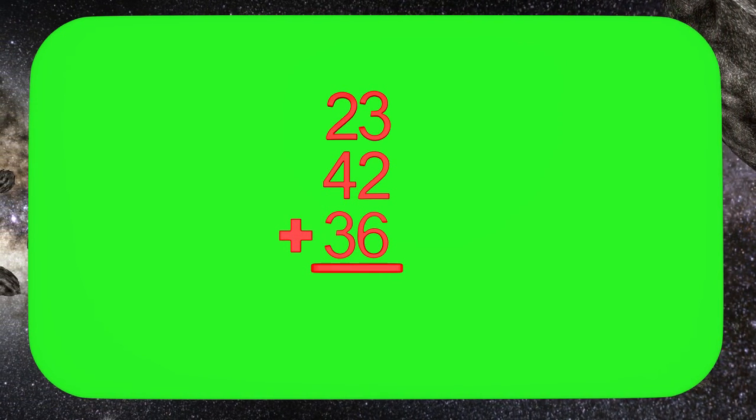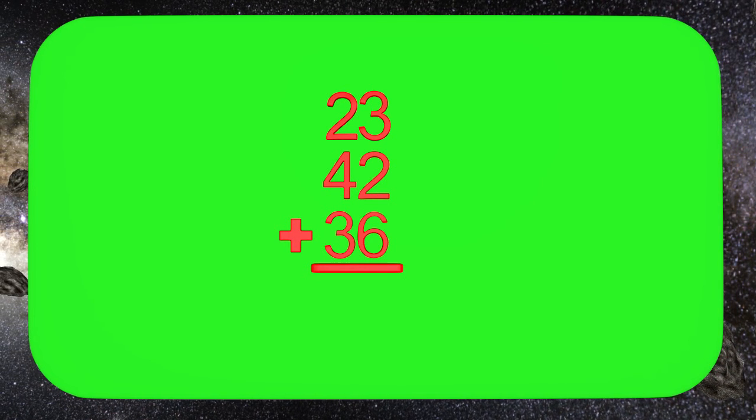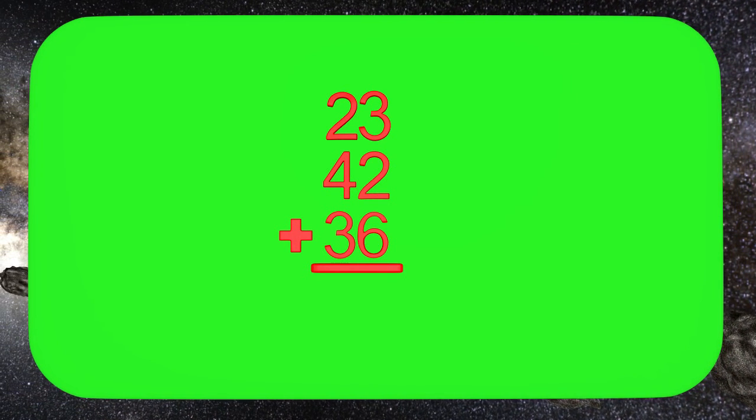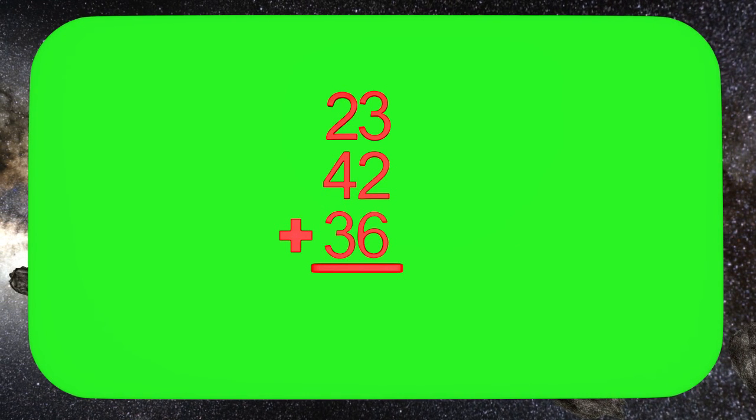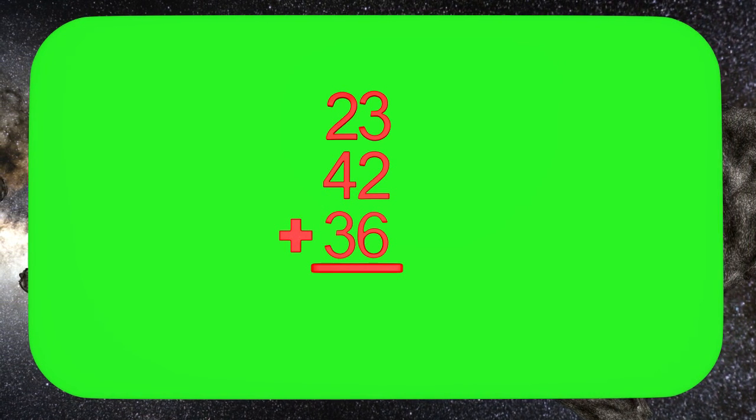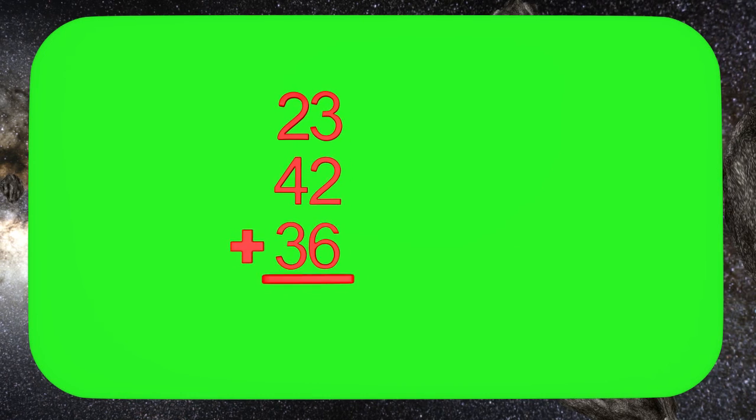The first method we are going to look at is sometimes called the break apart or expanded form method. This method uses what we know about expanded form. We will take the value of each of these digits and then add them together.